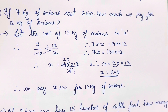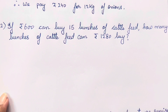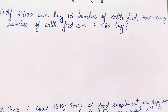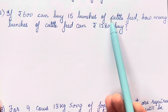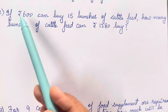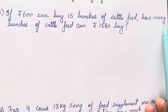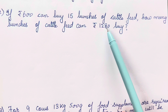Isn't it simple children? In further videos we are going to solve questions even more easily using simple division and simple multiplication only where necessary. Now the next question: if rupees 600 can buy 15 bunches of cattle feed, how many bunches of cattle feed can be bought for rupees 1280?